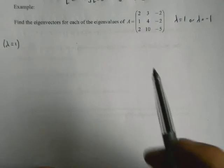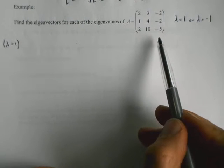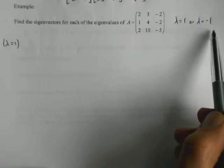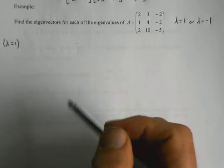Alright, let's have a crack at trying to find the eigenvector for the 3 by 3 matrix that we previously worked out the eigenvalues for. So here are the eigenvalues. So we'll do it for lambda equals 1.